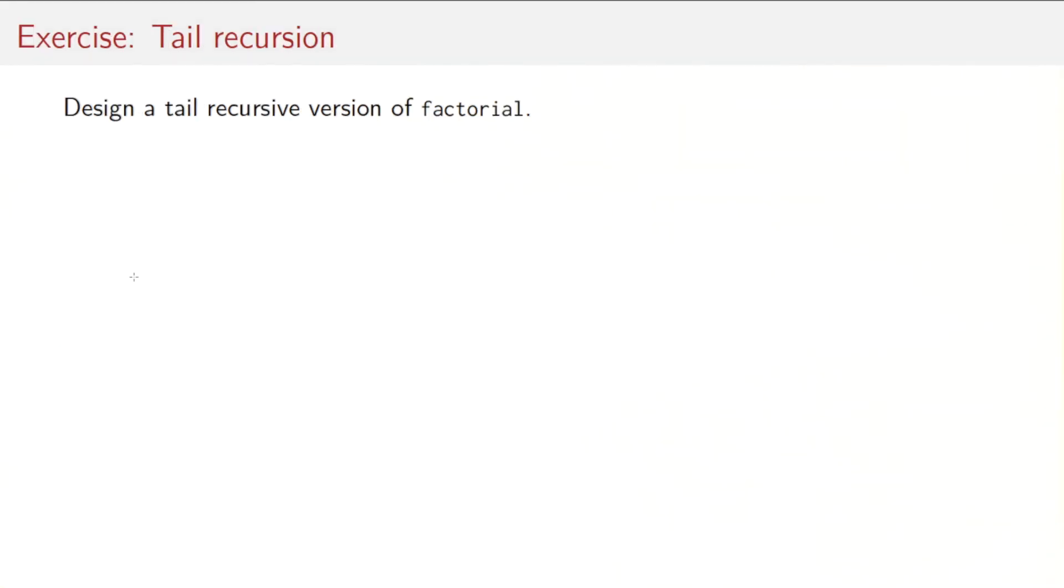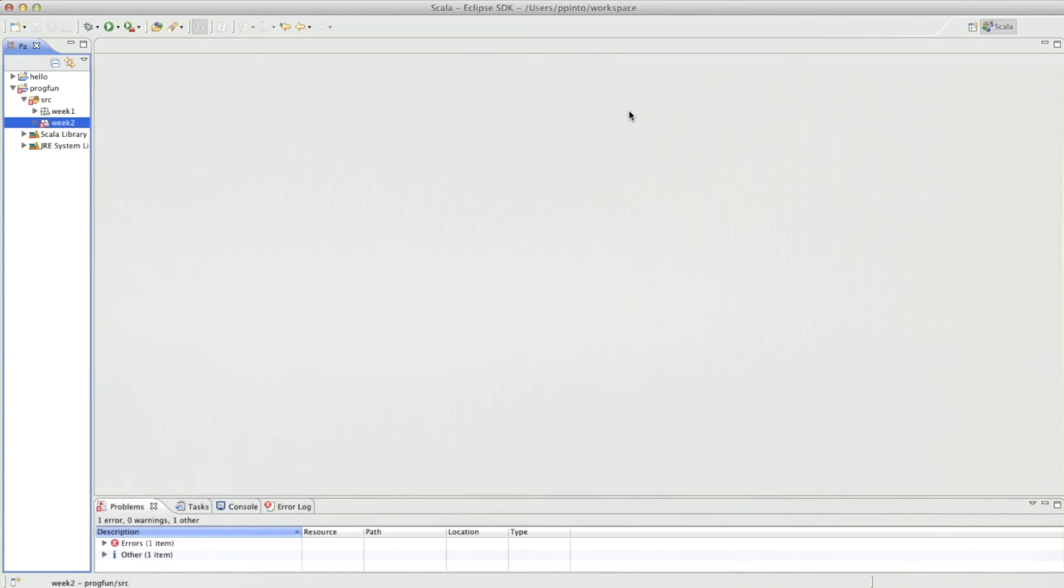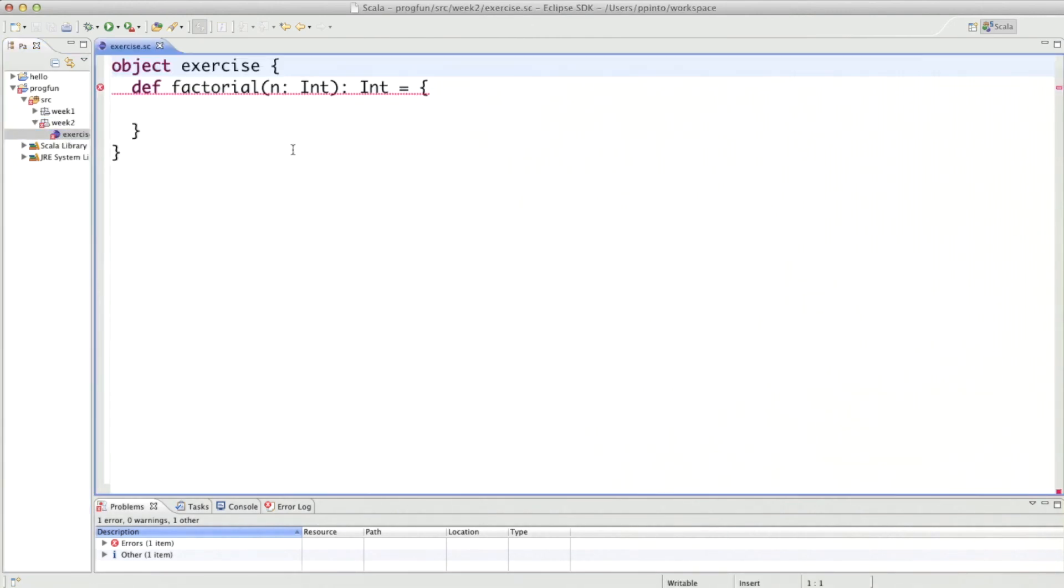So let's do an exercise on tail recursion. You've seen factorial, and we've seen that version of the function was not tail recursive. So now the task is to design a tail recursive version of the same function. So the most convenient way to solve this exercise is using another worksheet. I have already created a new package in our prog fun project called week two. And in that package, we have a worksheet exercise, in which I have already written the signature of factorial, but I've left out the implementation.